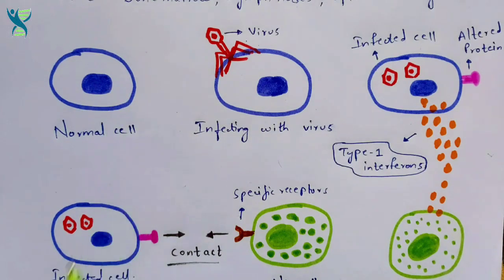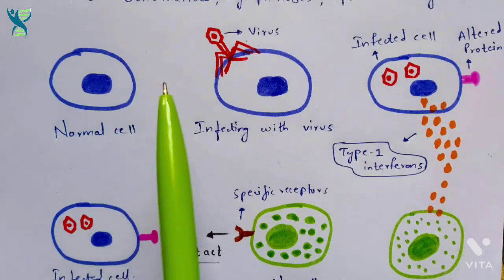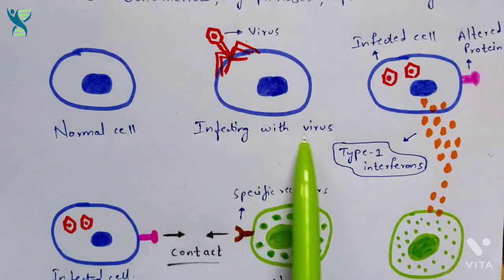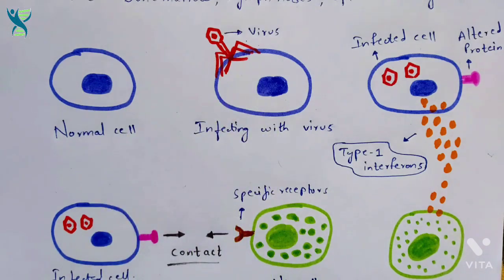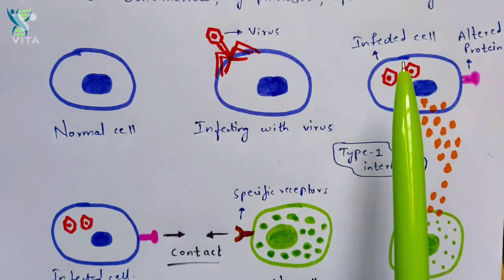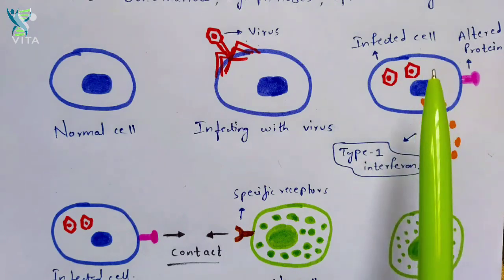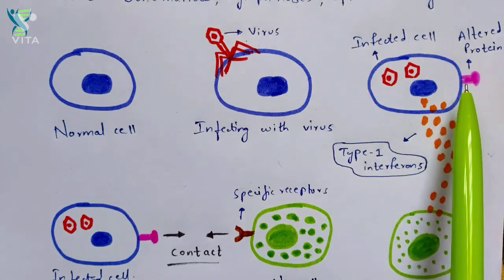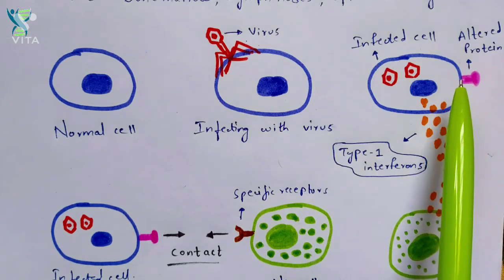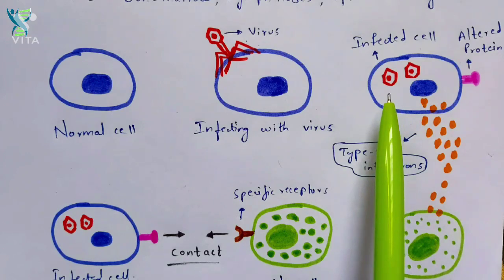Let us consider this as a normal cell — a non-infected cell which is very pure. Now, for instance, a virus will attack this normal cell, infecting it. All the viral particles will enter into the cytoplasm of this normal cell, and now this cell is considered as an infected cell because it contains viral particles from the external environment. This infected cell contains a particular protein on its surface called the altered protein, which plays a major role in the defense mechanism.